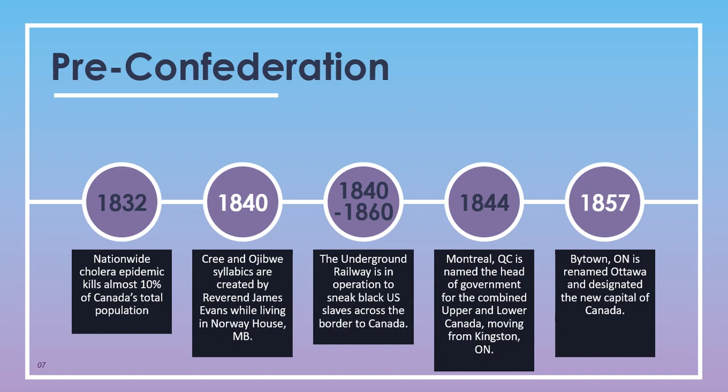From 1840 to 1860, the Underground Railway was used to sneak Black U.S. slaves across the border into Canada to obtain their freedom. In 1844, Montreal, Quebec was named the head of government for the combined Upper and Lower Canada, moving it from what had originally been modern-day Kingston, Ontario. In 1857, Bytown, Ontario was renamed Ottawa and designated the new capital of Canada.